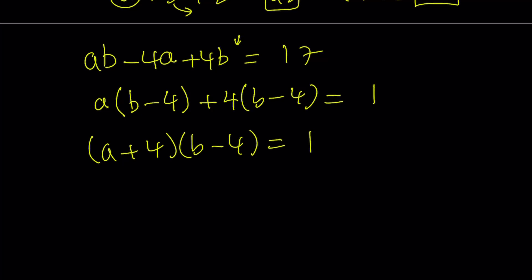So now we have a plus 4 multiplied by b minus 4 equals 1. This should be fairly easy because think about it. If a and b are integers, a plus 4 and b minus 4 are also integers. And their product is 1. So there's only two pairs of integers whose product is 1: 1, 1, and negative 1, negative 1.